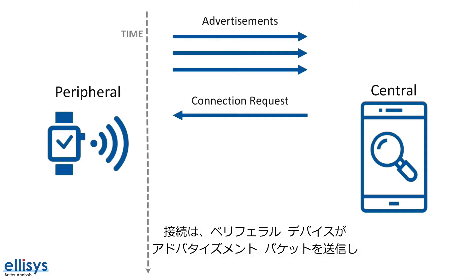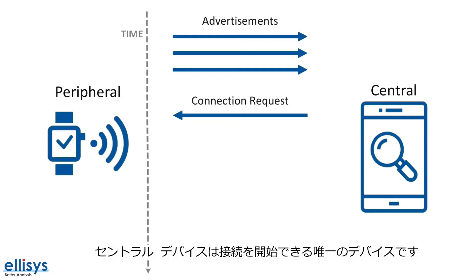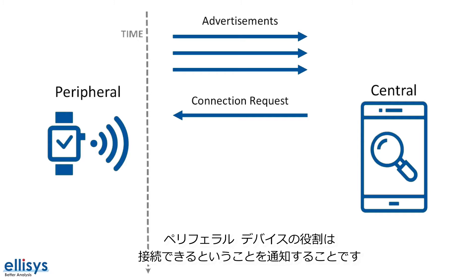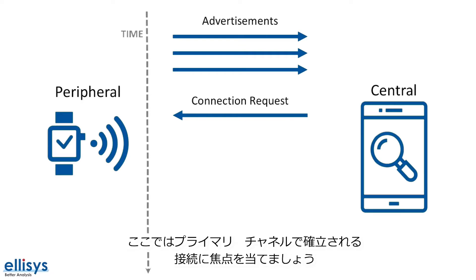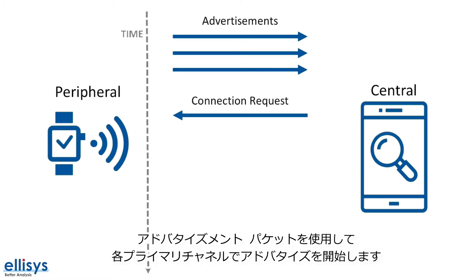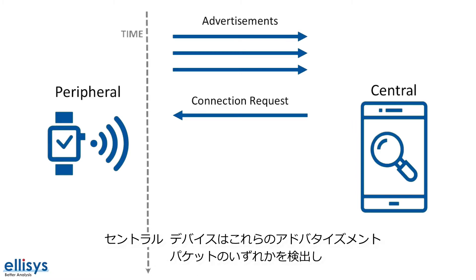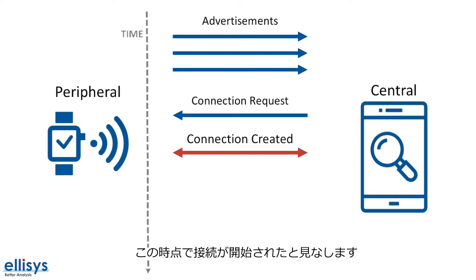It all starts with the peripheral sending out advertisement packets, allowing the central to discover it. Once the central device discovers the peripheral, it may decide to initiate a connection. The central is the only device that can initiate the connection; the peripheral's role is simply to advertise its ability to accept connections. The peripheral starts advertising on each of the primary channels with a type of advertisement that tells the discoverer that it can accept a connection. The central then discovers one of these advertisements and sends back on the same RF channel a connection request packet, at which point the connection is considered to be created.